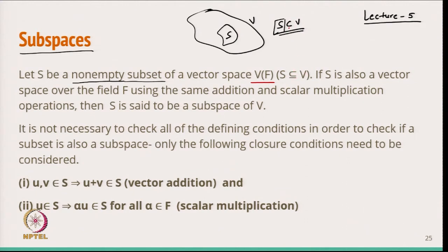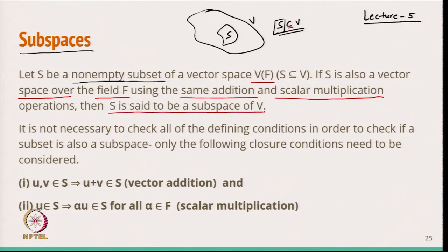S can be a proper subset or may be equal to V, that is why the equality sign is there. Now, if S is also a vector space over the same field F, using the same vector addition and scalar multiplication — that you have to keep in mind — then S is called a subspace of V.